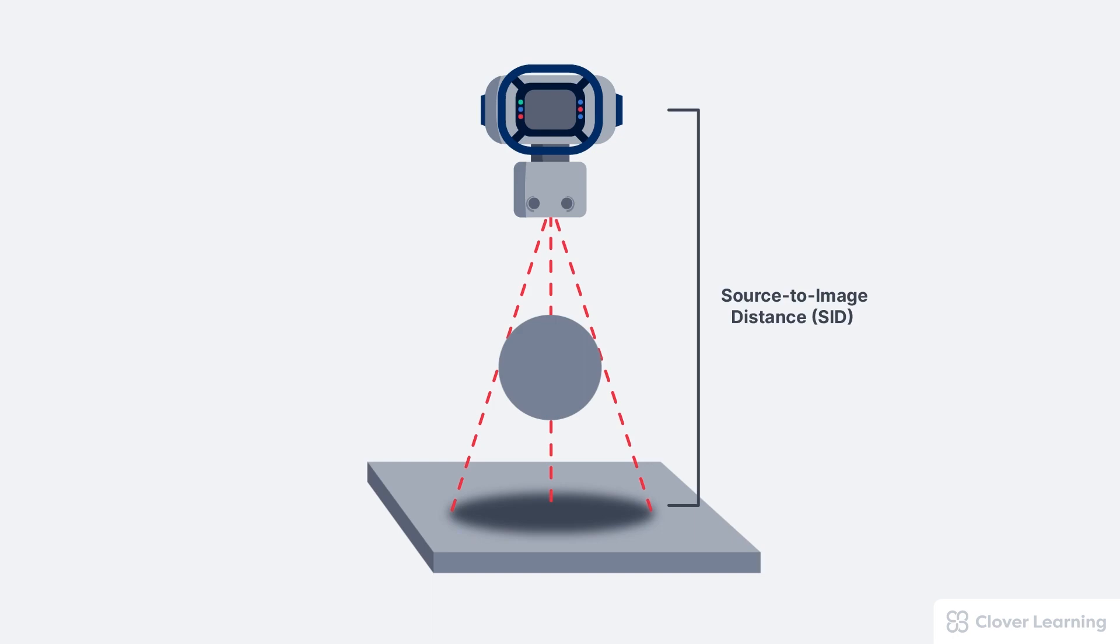It's also influenced by the object to image distance or OID, which is the distance from the target anatomy to the image receptor. And finally, magnification distortion is influenced by the SOD, the source to object distance, which describes the distance between the source of the x-ray beam and the anatomy being imaged.